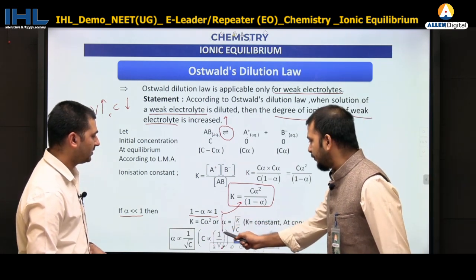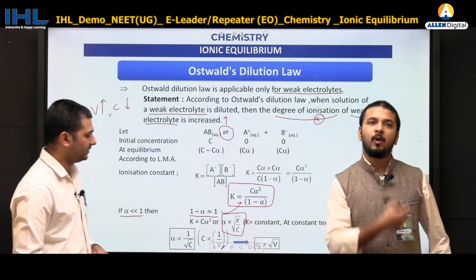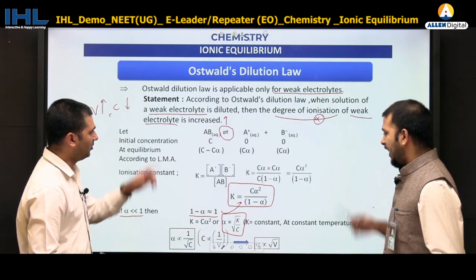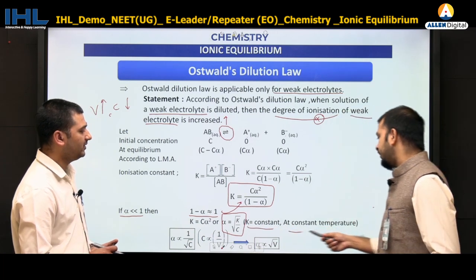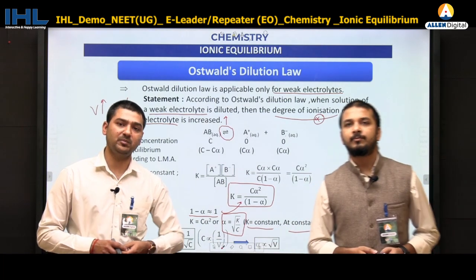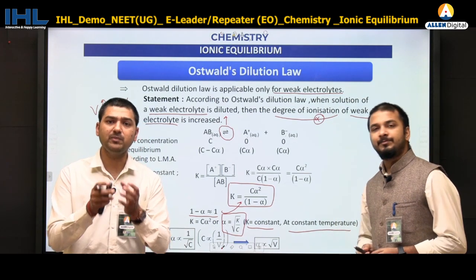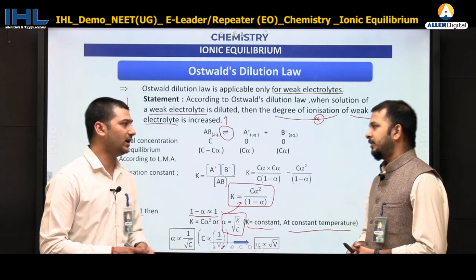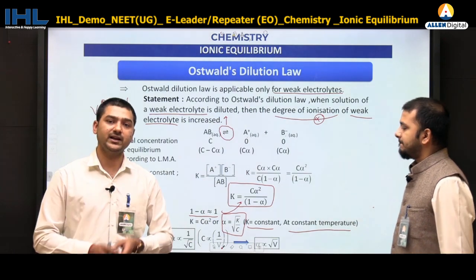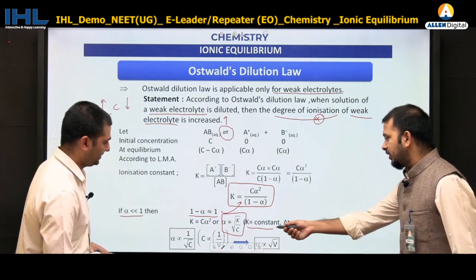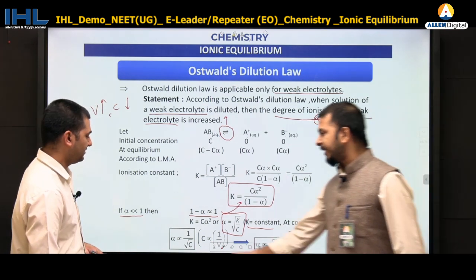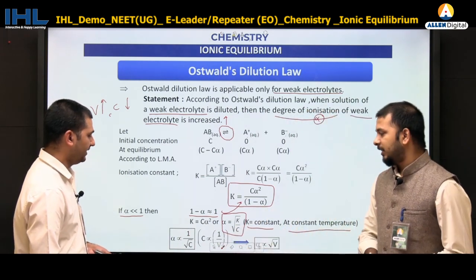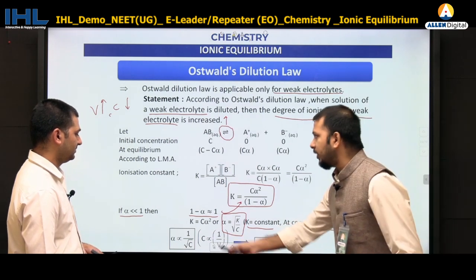Here K is the ionization constant and C is the concentration. K is constant at constant temperature — every weak electrolyte at a given temperature has its own unique experimentally determined ionization constant. So at constant temperature, α ∝ 1/√C. Since concentration C ∝ 1/V, we get α ∝ √V.